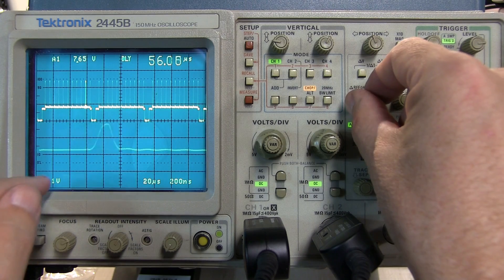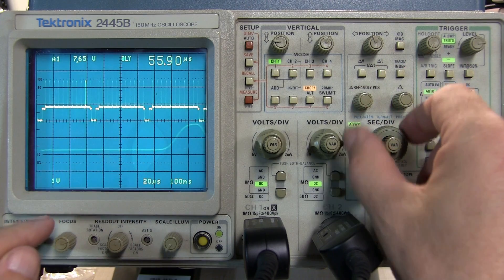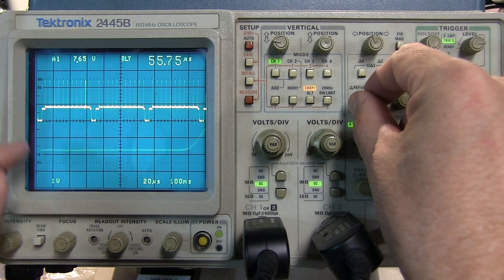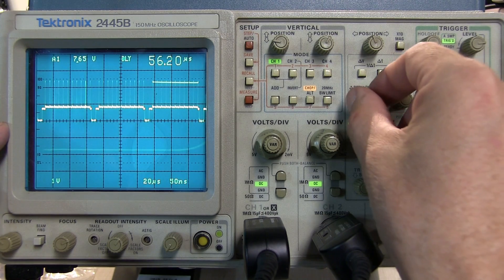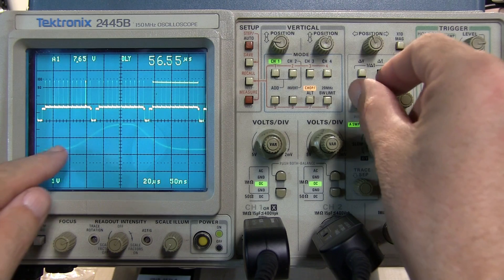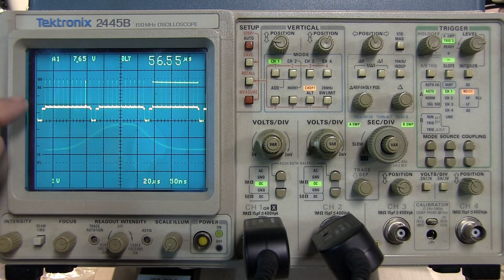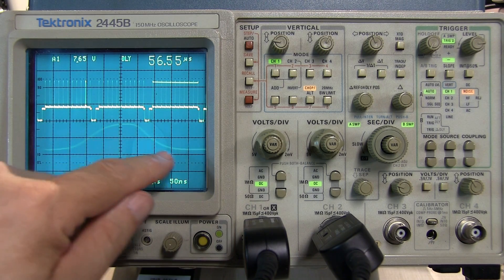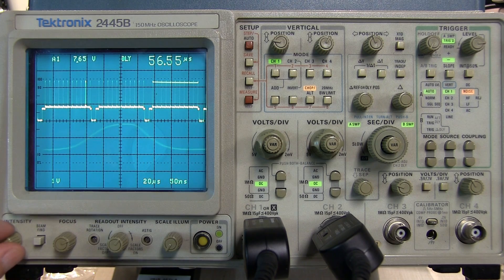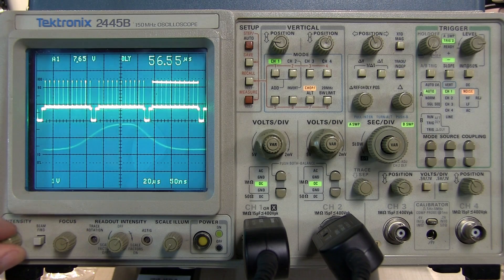Because relative to the main time base we might be sweeping so fast that we're just not really going to be able to see the B trace so much. So we're going to have the A trace look very bright and the B trace look pretty dim. We could turn the intensity up to try to make up for that but it's really just not helping us too much on the delayed B sweep.